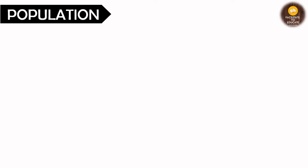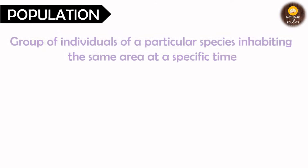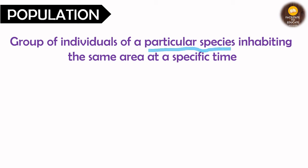Before talking about the characteristics of population, let us see what is a population. It is a group of individuals of a particular species. The individuals are of a specific species that are inhabiting the same area at a specific time. So they should be of the same species, they should live in the same area, and they should be living in that area at a specific period of time.